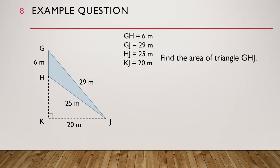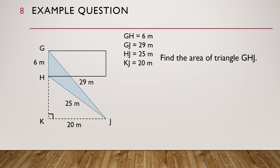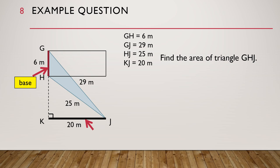Let's look at an example question. In this diagram, we have triangle GHJ. The measurements are as shown in the diagram. The question asks us to find the area of triangle GHJ. Can you see the right angle in the question? KJ is perpendicular to GHK. So we are going to use this as the height of the triangle and draw our related rectangle like this. GH is the base of the triangle, and KJ is the height of the triangle.